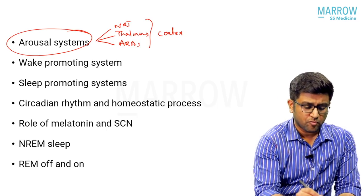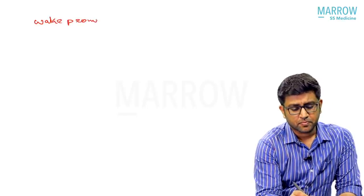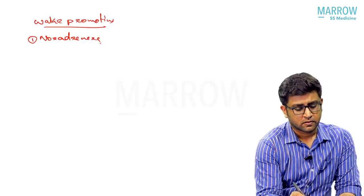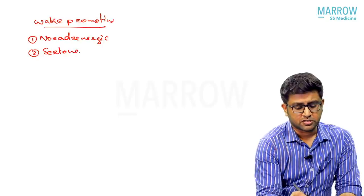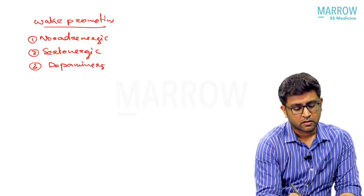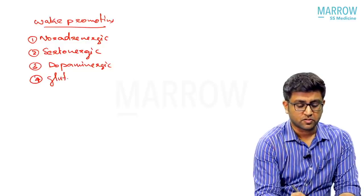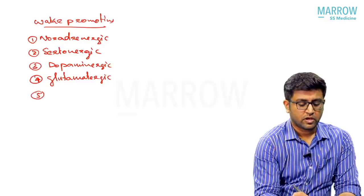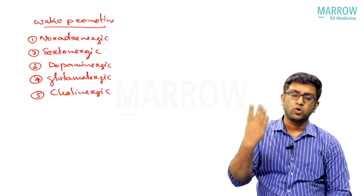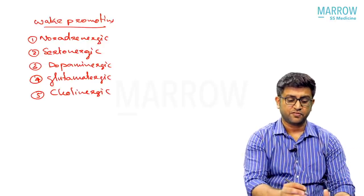The wake-promoting system includes multiple neurotransmitters from the ARAS. Most neurotransmitters coming from the ascending reticular activating system are wake-promoting. These include: noradrenergic, serotonergic, dopaminergic, glutamatergic, and cholinergic systems. These are monoaminergic systems — serotonergic, noradrenergic, dopaminergic, and glutamatergic — along with the cholinergic system. All these systems originate from the brainstem or from the ARAS.